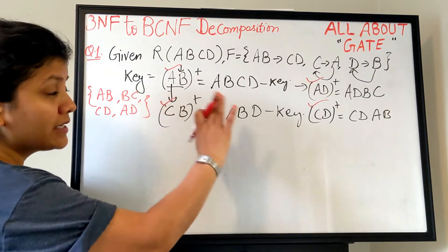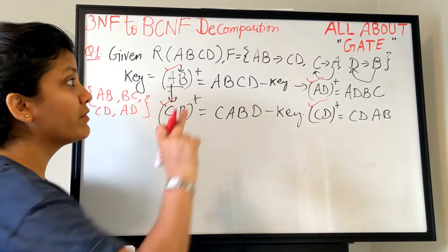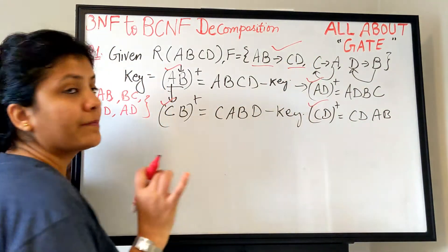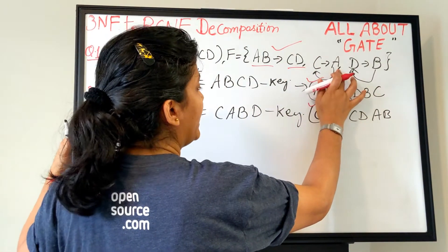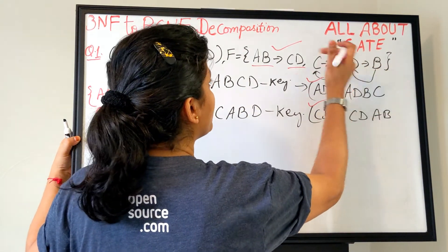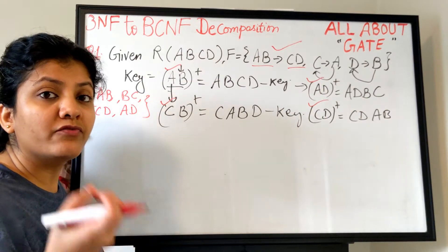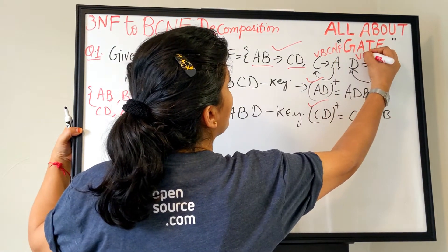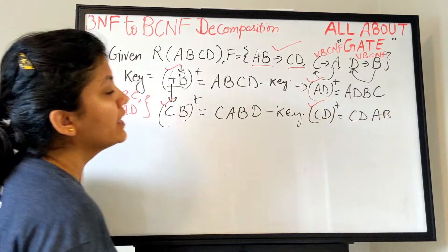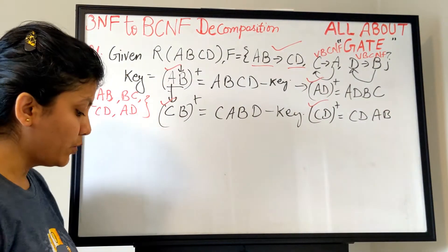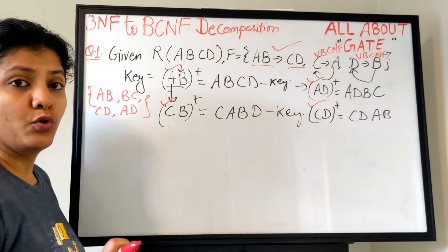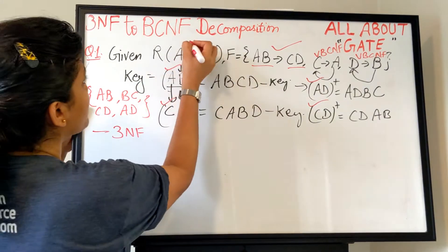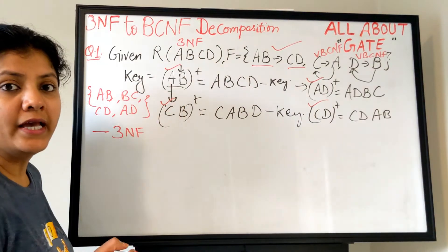Now we check the dependencies. AB→CD is a key determining non-trivially — that's fine. C→A is a key attribute determining a key attribute, and D→B is also a key attribute determining a key attribute. These are violations of BCNF. We don't see any partial dependency or transitive dependency, so this relation is in third normal form.